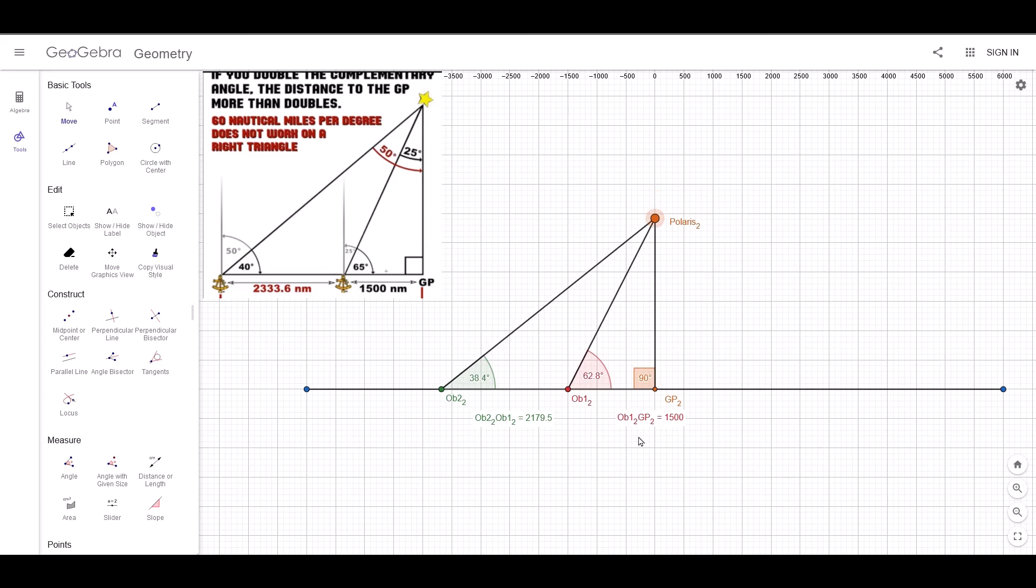The globe representation had no issues at all respecting the 60 miles per degree. But the flat earth representation is problematic throughout. So Brian, you're the flat earth expert. You show us how it should be done.